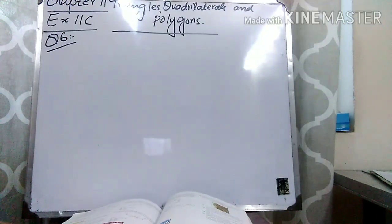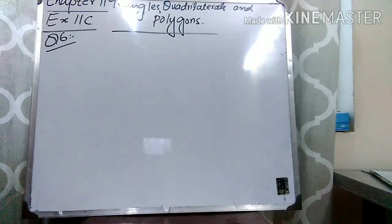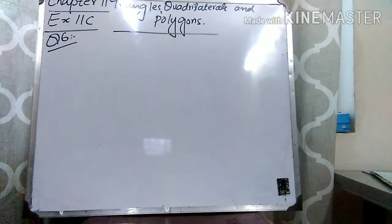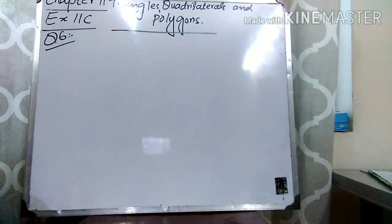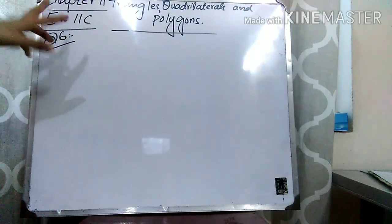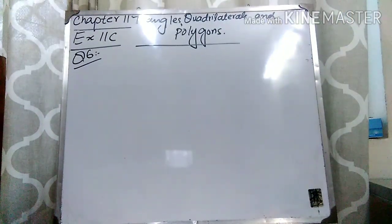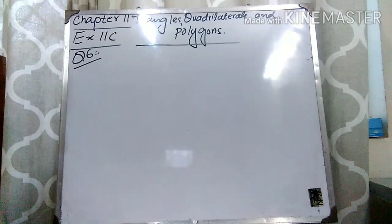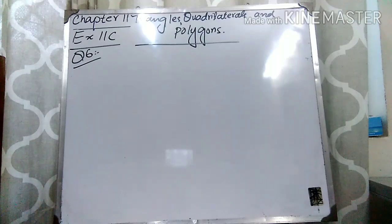I am Nikon Strauss. Welcome to the channel Max D. Bundy Scientific Academy. Today our lecture is related to Chapter 11, which is triangles, quadrilaterals and polygons. Your book is New Syllabus Mathematics 1. I'm going to explain question number 6 of Exercise 11c. Before starting the lecture, if you want more help regarding your subject, please subscribe to the channel. Let's come to the lecture.